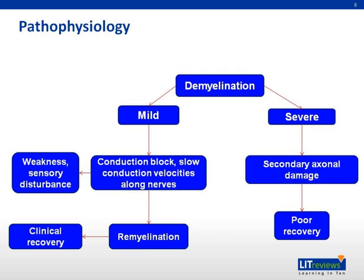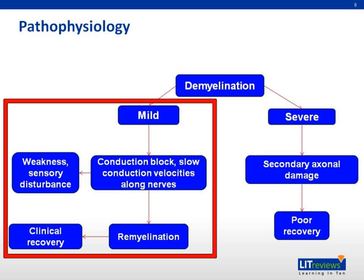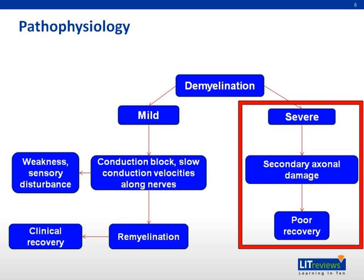The flaccid paralysis and sensory disturbance seen in GBS is due to conduction block as a result of demyelination. Axonal connections remain intact; hence, rapid and complete recovery is possible when remyelination occurs. However, in severe forms, secondary axonal degeneration can occur, and such cases are associated with slow recovery and more severe residual disability.